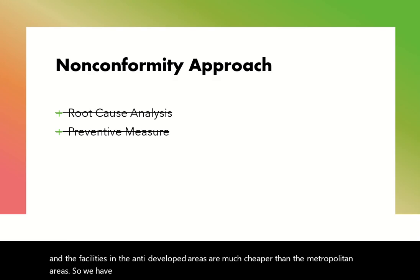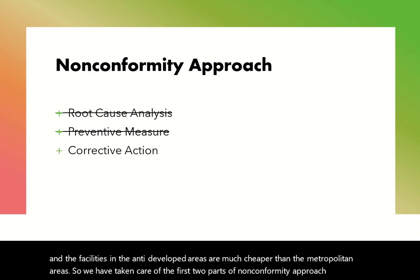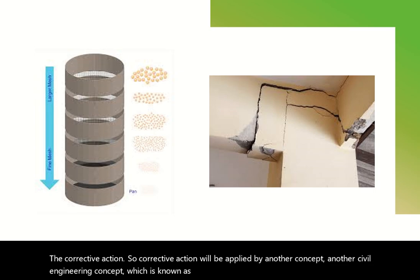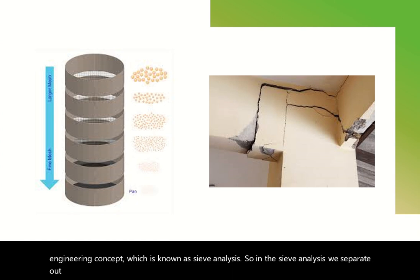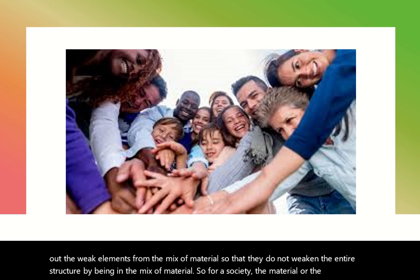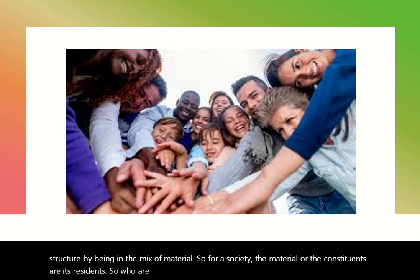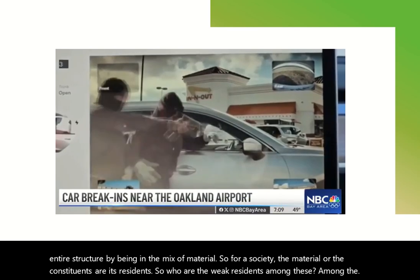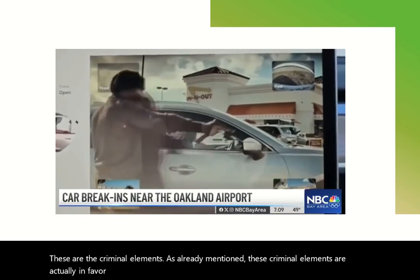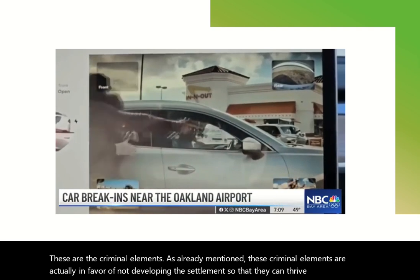We have now taken care of the first two parts of the non-conformity approach. Now we move to the third part: applying the corrective action. Corrective action will be applied using another civil engineering concept known as sieve analysis. In sieve analysis, we separate out the weak elements from a mix of material so that they don't weaken the entire structure. For a society, the constituents are its residents. The weak residents among the society are the criminal elements. These criminal elements are actually in favor of not developing these settlements so that they can thrive, hide, and operate there.